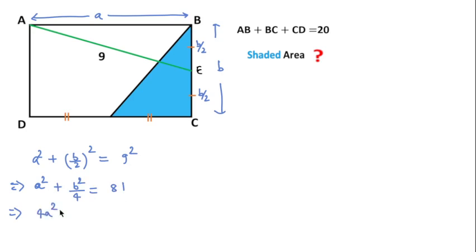Now we can write 4A² + B² = 324. Now I will use this: since AB is A units, so CD will also be A units.